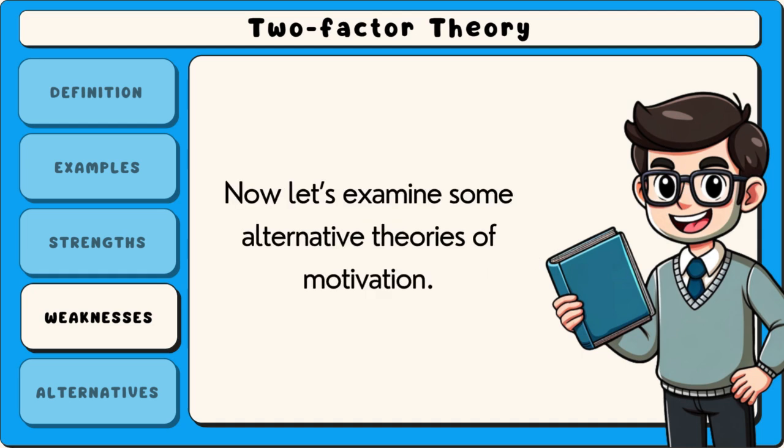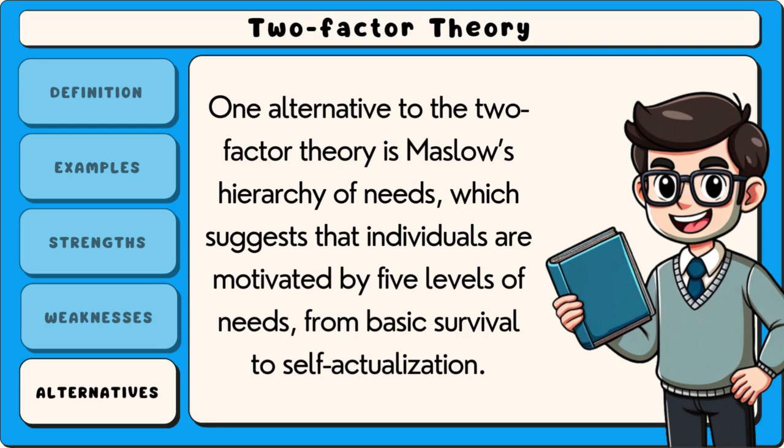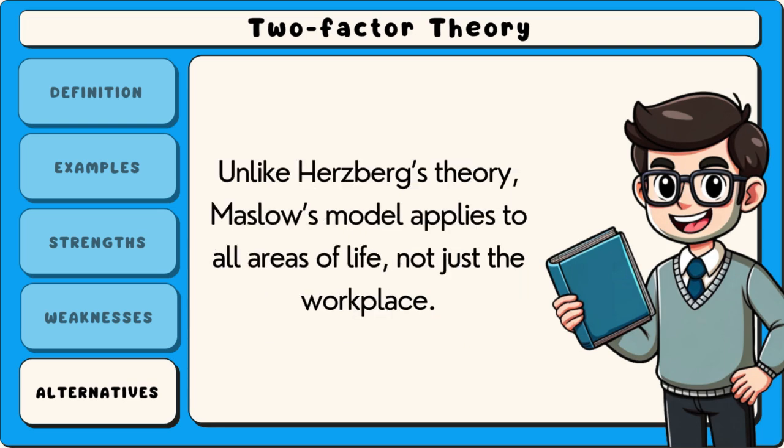Now let's examine some alternative theories of motivation. One alternative to the two-factor theory is Maslow's hierarchy of needs, which suggests that individuals are motivated by five levels of needs, from basic survival to self-actualisation. Unlike Hertzberg's theory, Maslow's model applies to all areas of life, not just the workplace.